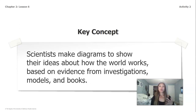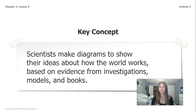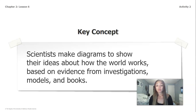Our key concept for this was: scientists make diagrams to show their ideas about how the world works based on evidence from investigations, models, and books. We've been doing all of these things when we investigated the flower. We've looked at a bunch of different models of cliffs and diagrams, and we have also read the book What's Stronger to help us get more ideas for how we can answer that question about how the cliff changed.